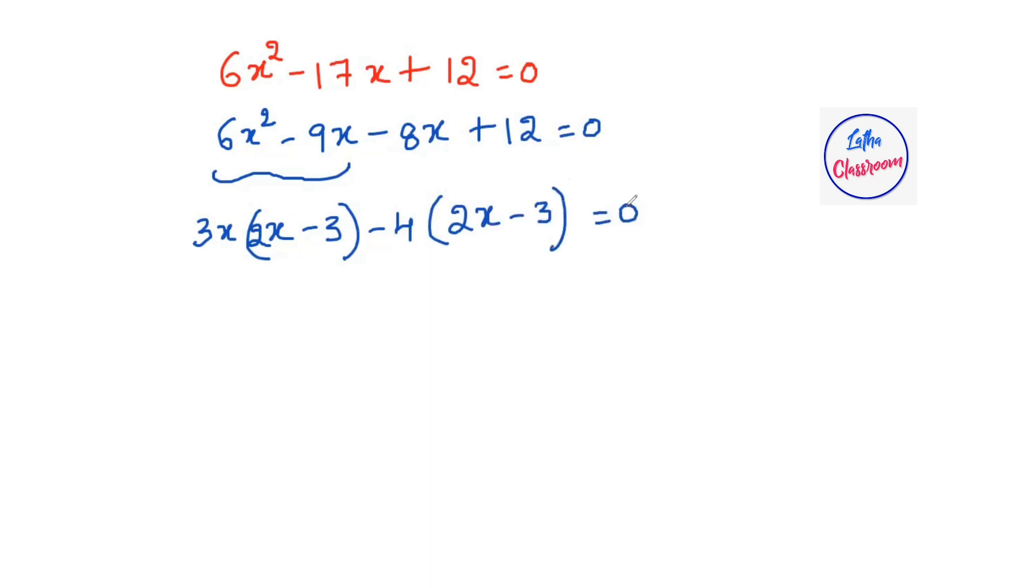If you multiply all these terms again, you will get the previous expression. So we have (3x - 4)(2x - 3) = 0.